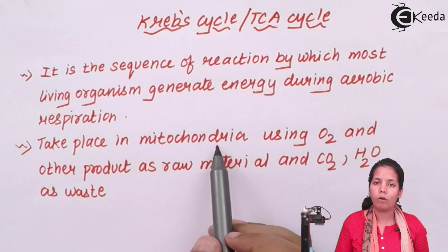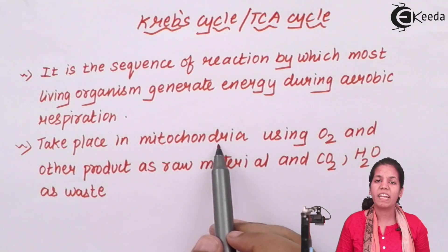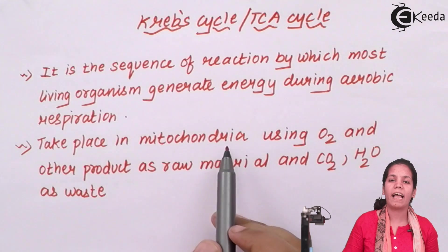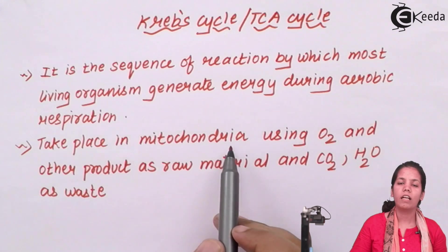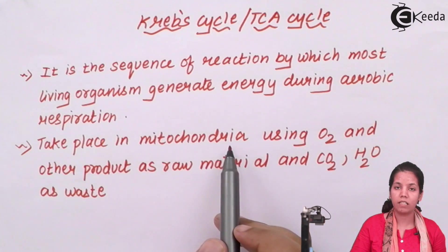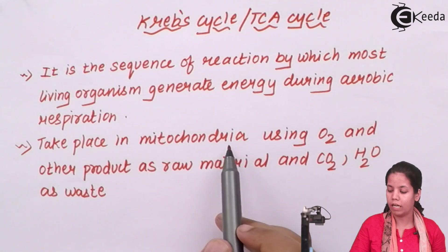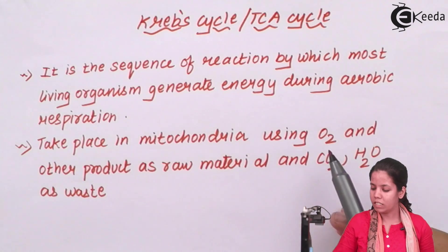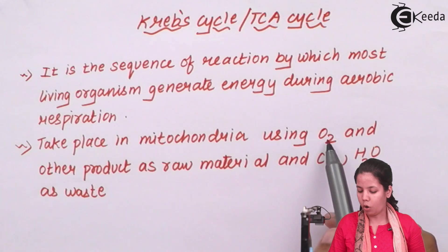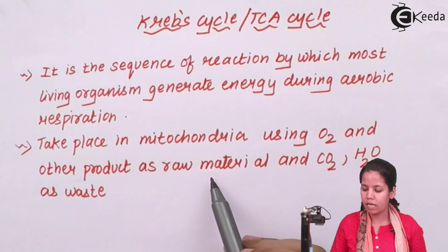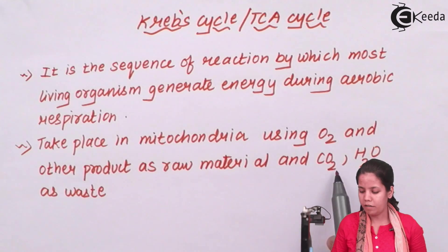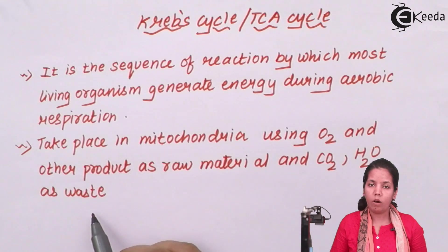The mitochondria is the powerhouse of the cell — the place where ATP is actually synthesized — and it contains an ATPase machine in its matrix that carries out this process. Oxygen is used as a raw material during this process, whereas carbon dioxide and water are given out as waste or byproducts.